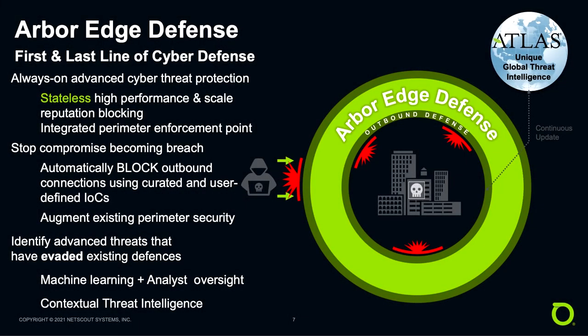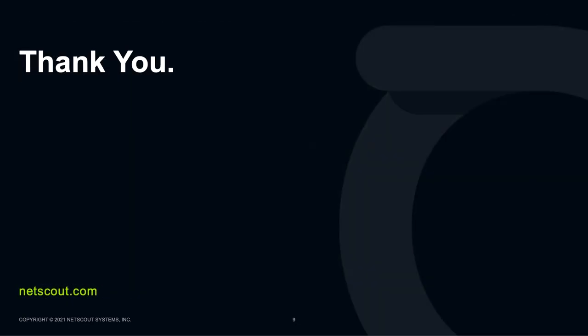That's about all we have time to cover, but we've shown how Arbor Edge Defense can be your first and last line of cyber defense. Its stateless, high-performance, reputation-based blocking is able to stop a compromise from becoming a full-on breach, and with its unique position on the network, is able to identify all the threats that your existing security stack has missed. Thank you very much for listening.